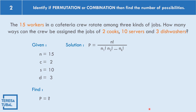The formula for distinguishable permutation is N factorial all over N-sub-1 factorial times N-sub-2 factorial and so on up to N-sub-k factorial, where N-sub-1 is C (cooks), N-sub-2 is S (servers), and N-sub-k is D (dishwashers). Substituting: P equals 15 factorial over 2 factorial times 10 factorial times 3 factorial.